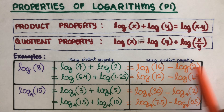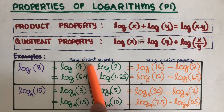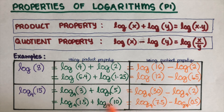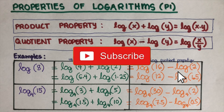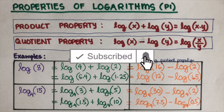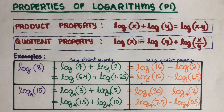There are numerous number combinations we can form using the product and quotient properties — I'm just showing a few examples here. If you find this video helpful, please like and subscribe for more math videos. See you!